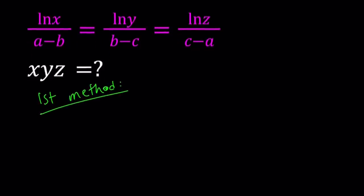My first method involves the following. I'm going to take two expressions at a time and cross multiply and come up with an equation from there. So let's take the ln x and ln y together. That gives us b minus c ln x, or I should probably write the y first. That's what I want to isolate.